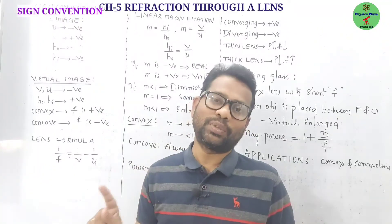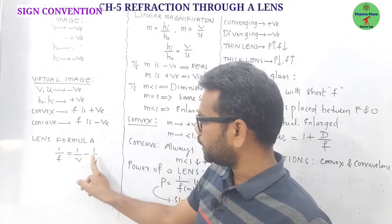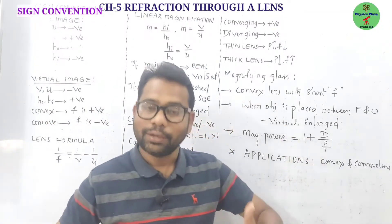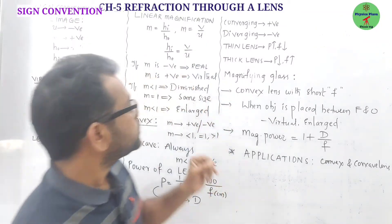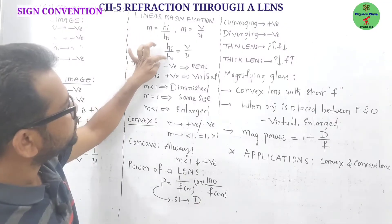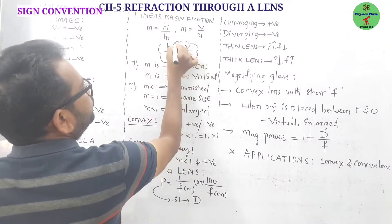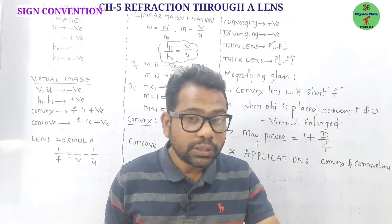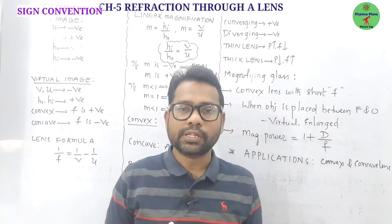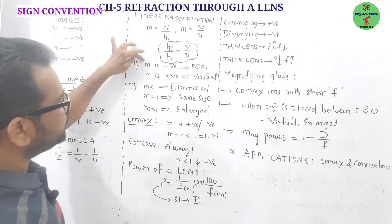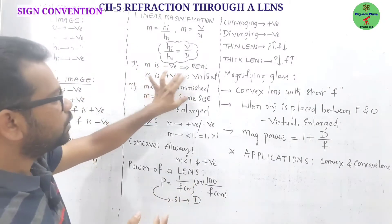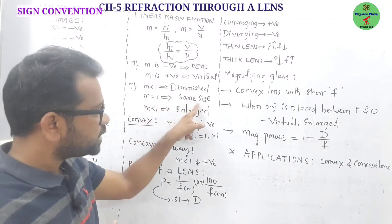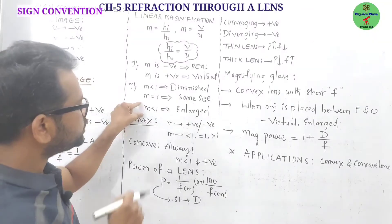The lens formula gives the relation between focal length, image distance, and object distance: 1/f = 1/v − 1/u. Linear magnification is the ratio of image height to object height, or image distance to object distance: m = hᵢ/h₀ = v/u. The sign of linear magnification tells the nature of the image: negative means real, positive means virtual. The value tells the size: less than 1 is diminished, equal to 1 is same size, greater than 1 is enlarged.